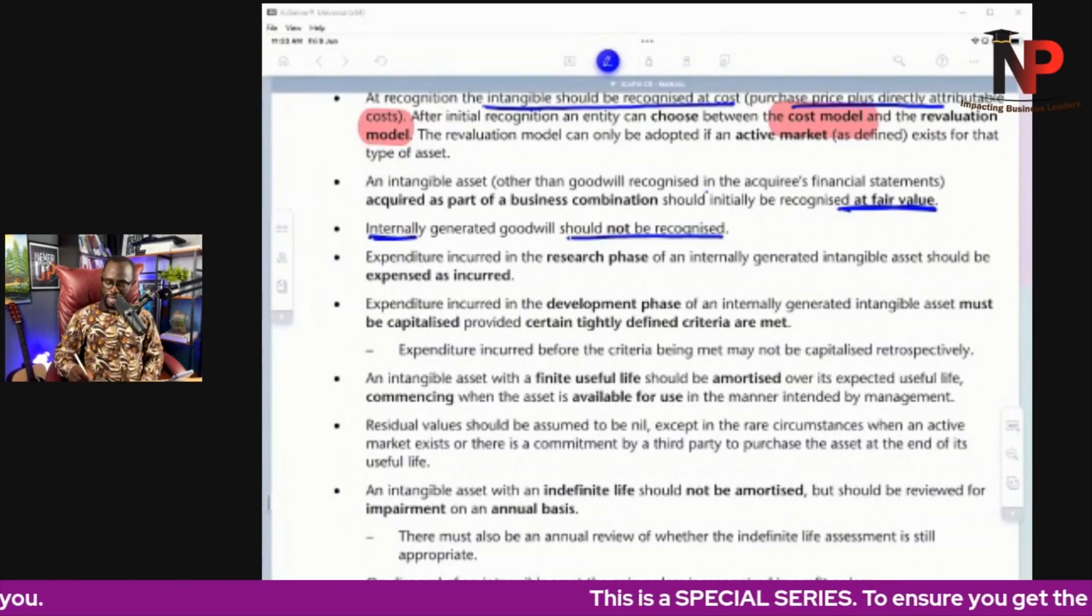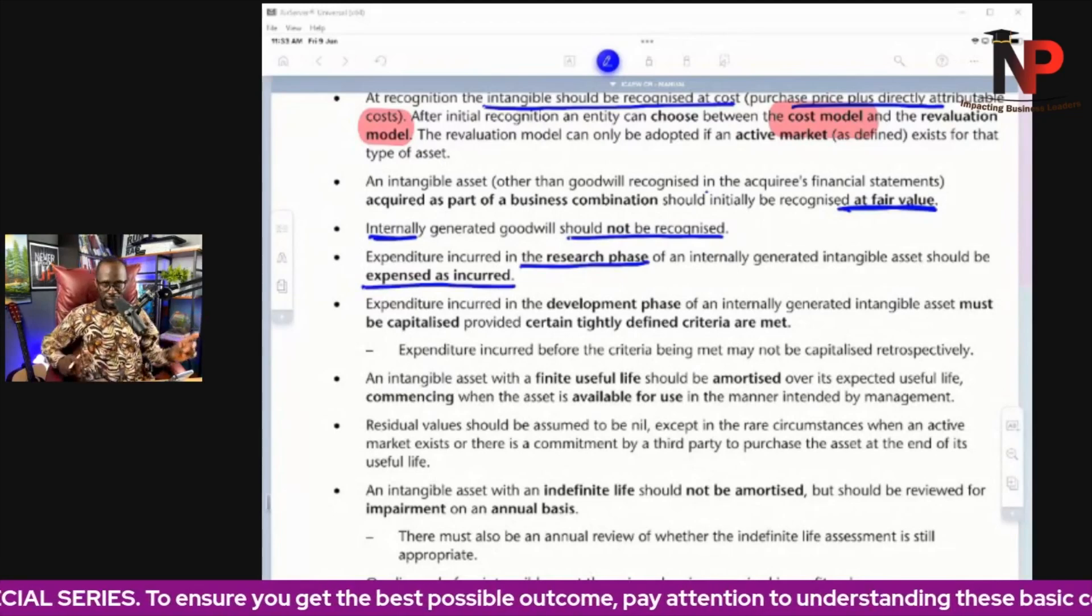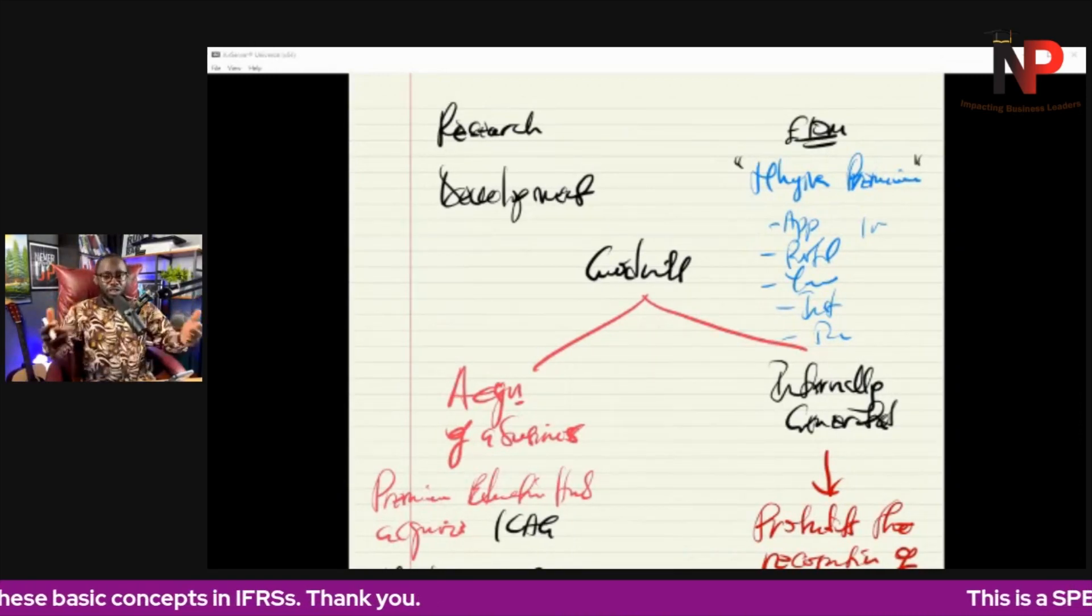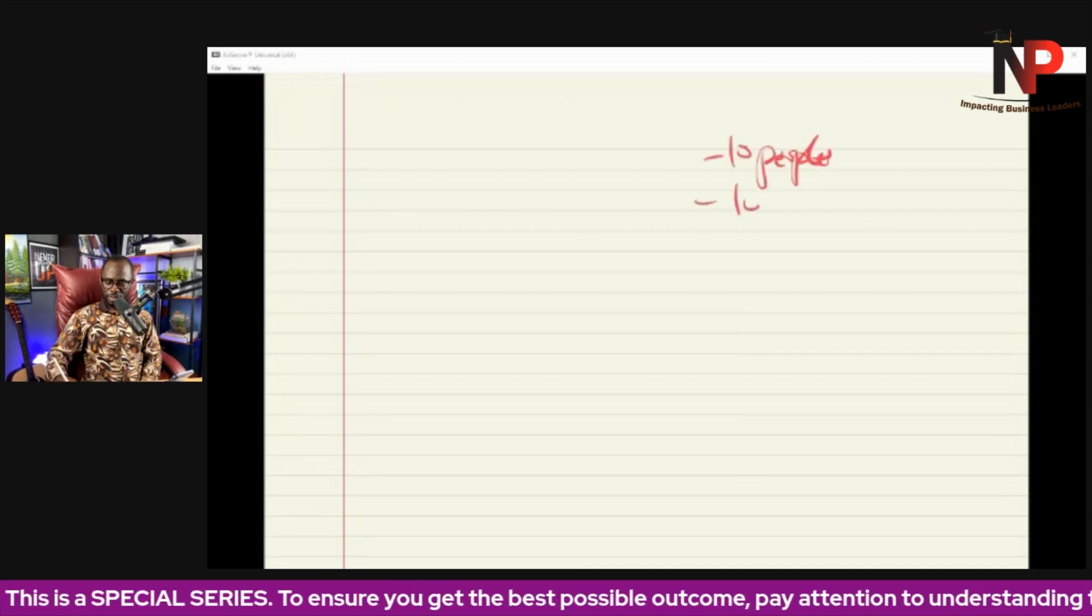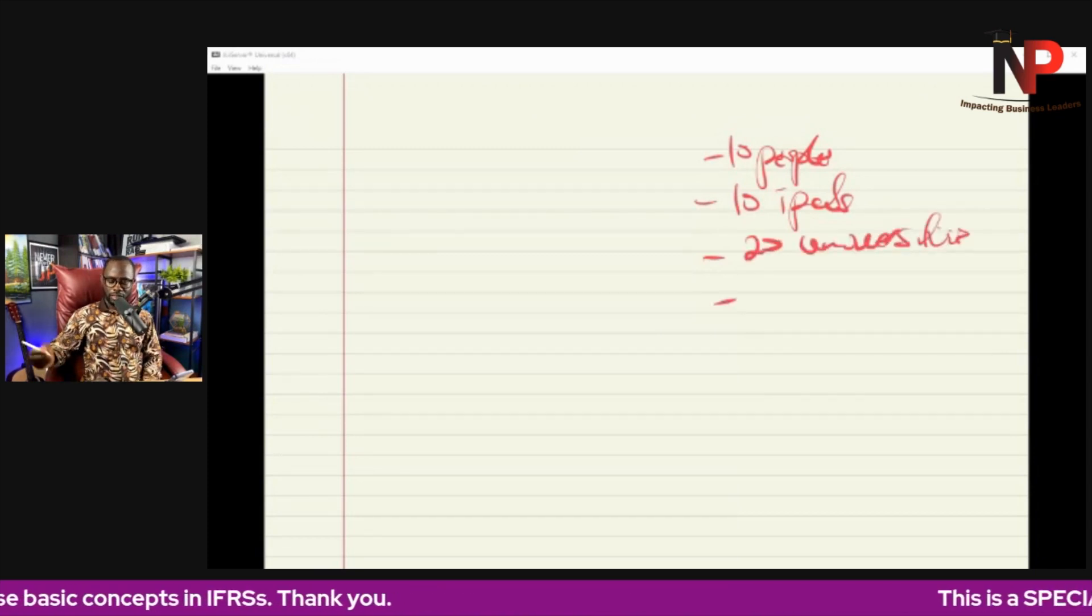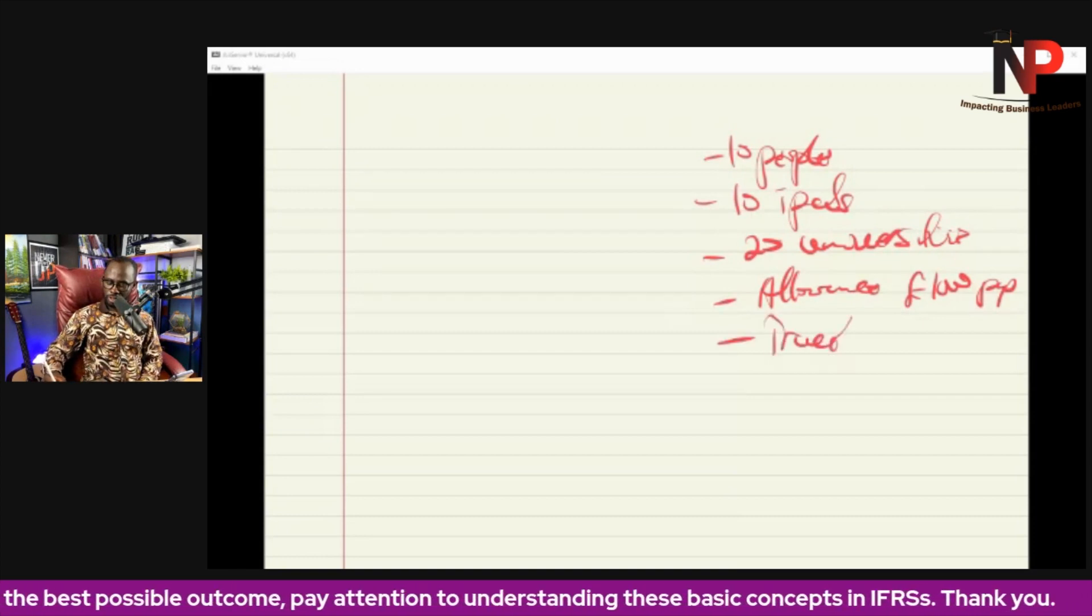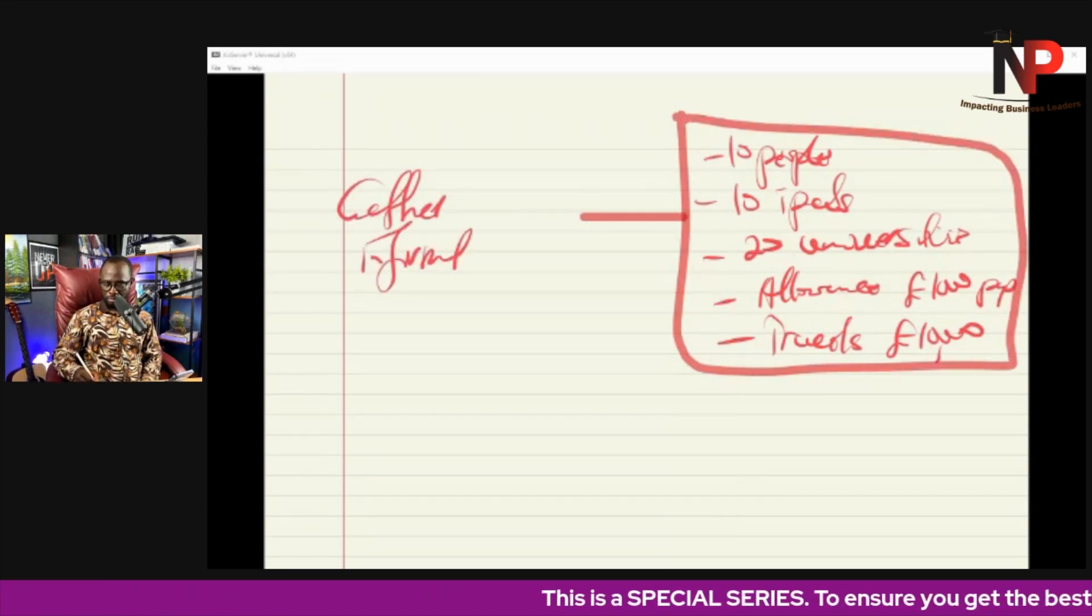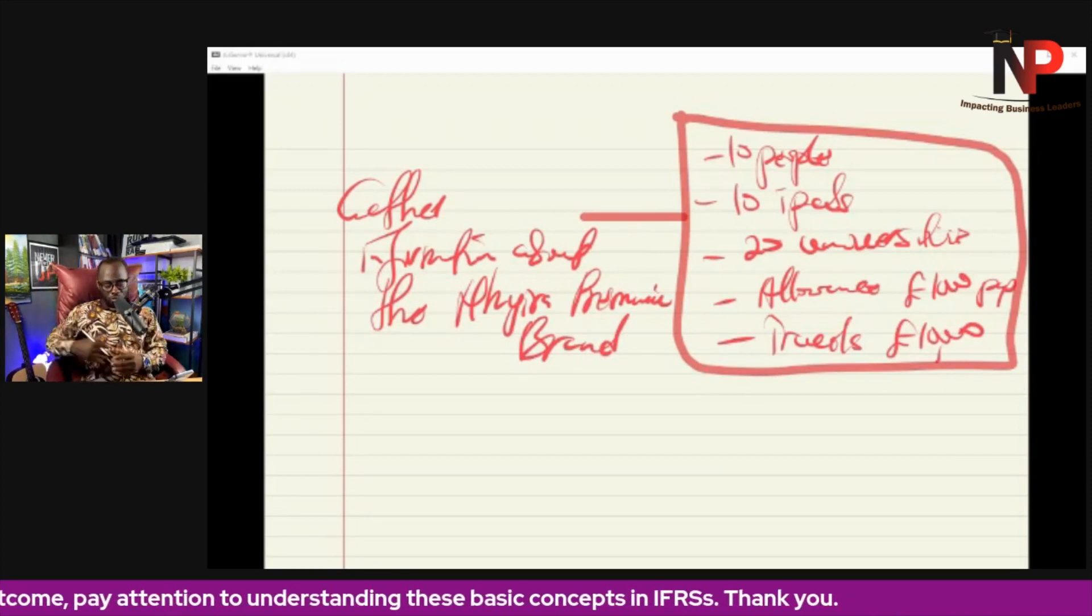Let's continue. Expenditure incurred in the research phase of an internally generated intangible asset should be expensed as incurred. I told you about research. So if a company is seeking to understand its products or researching about a product and they incur some cost, this is what we are saying. Let's say for instance we employ 10 people and we gave them 10 iPads and we ask them to go to 20 universities across Africa, and we are going to be paying them allowance of whatever thousand per person, and they are going to have travel expenses in total of 10,000. All they are doing is to gather information about the Insure Premium brand because we want to find out how we can change and improve upon what we are doing as an institute. So that is research.